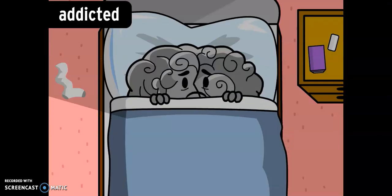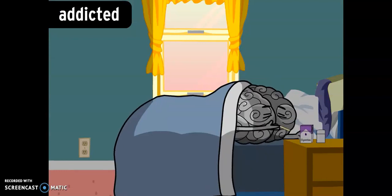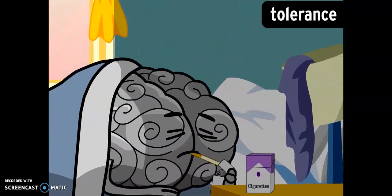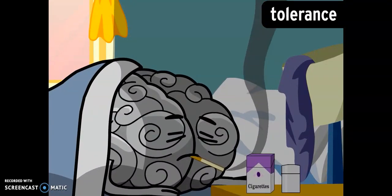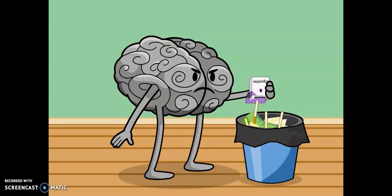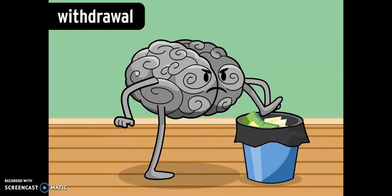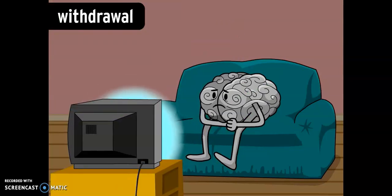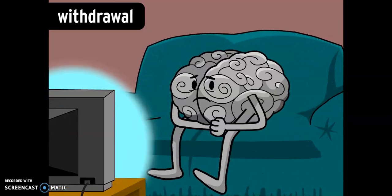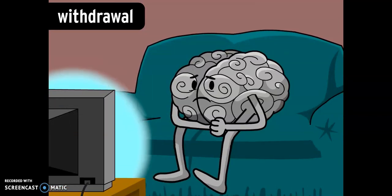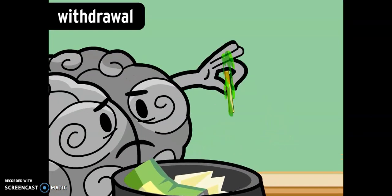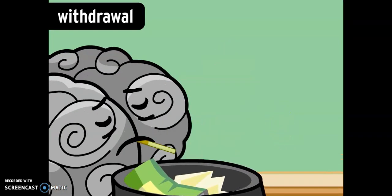They become addicted, which means they're unable to stop. At the same time, they develop a tolerance to nicotine. They need to use more and more of it to get the same pleasurable effects. Well, when smokers try to quit, they usually experience withdrawal. They can feel irritable, anxious, hungry, and restless. They may struggle to concentrate or go to sleep. People who stop smoking successfully usually need a lot of support. That's why it's way easier to just not start in the first place.